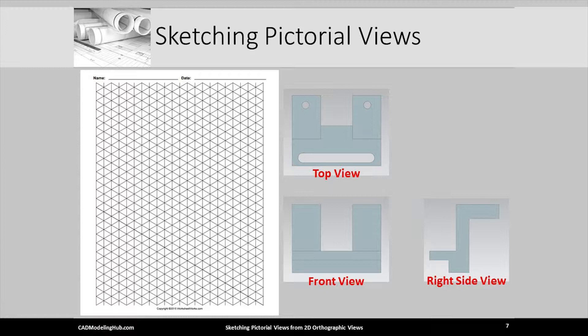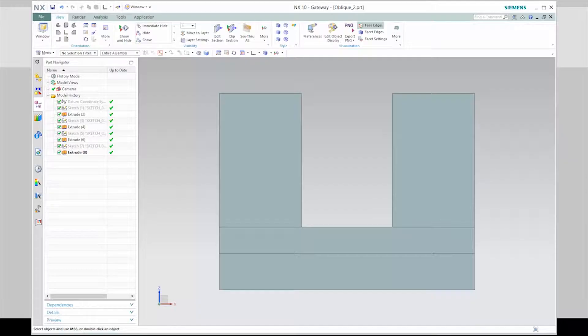Our second part is defined by these 3D orthographic views. In a few minutes, I will use isometric graph paper to sketch the pictorial view of this part. Let's again watch a Siemens NX video clip that shows what this object looks like in its isometric view.